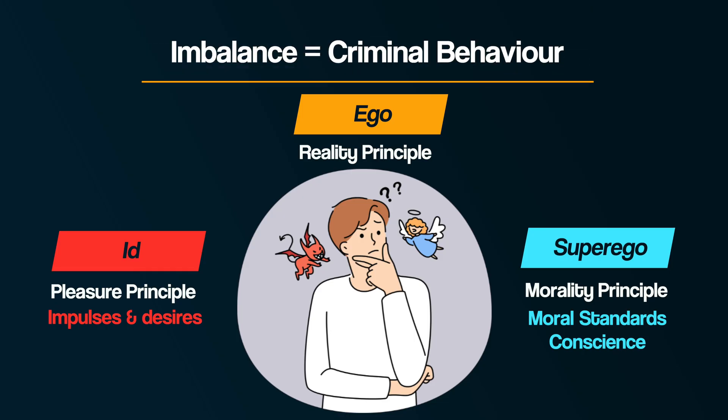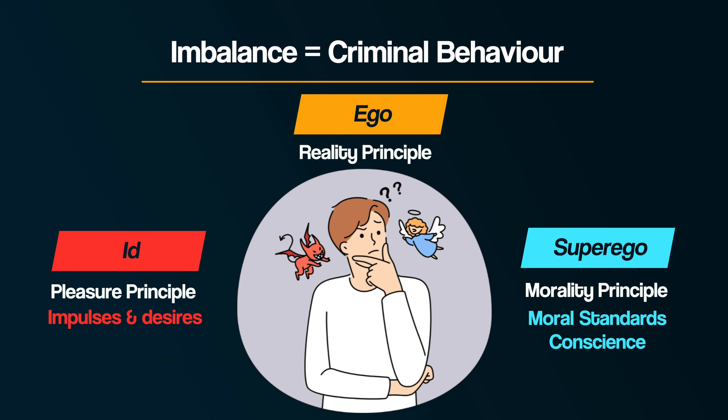The key to understanding how Blackburn's theory links to criminal behaviour lies in the imbalance between the id, your impulses and desires, and the superego, your moral standards. According to Blackburn, there are three main types of inadequate superego that can lead to criminal behaviour. In each of these three, the ego is unable to properly manage the competing demands of the id and superego.